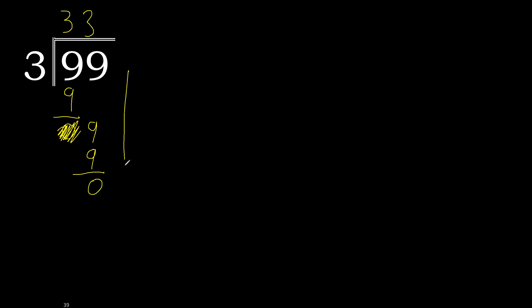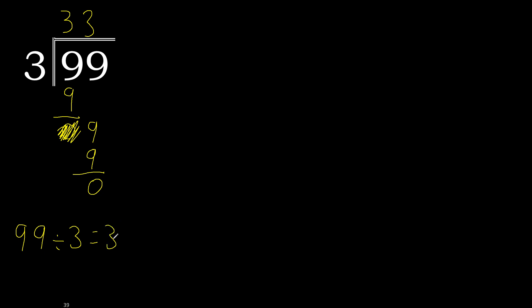And there is no number remaining. Finish. Remainder is 0. 99 divided by 3 is 33. Finish.